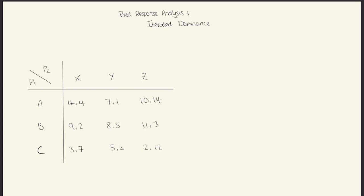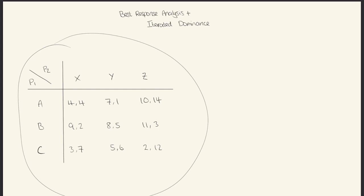We have a three by three matrix game table here where A, B, and C are the options that player one can choose, and X, Y, and Z are the choices that player two can choose from. There are two values within each cell — the first value in every row and column represents the payoff of player one, and the second value is the utility that player two gets.